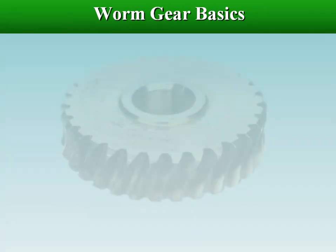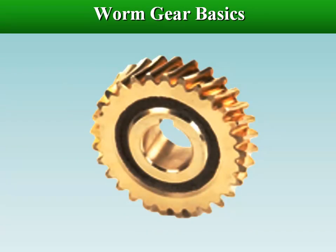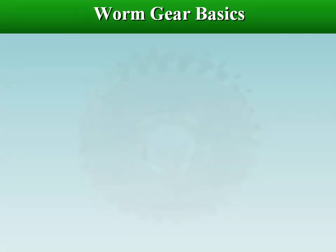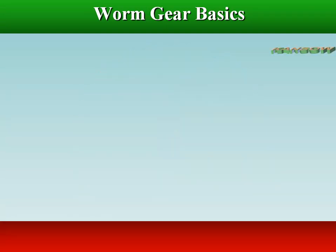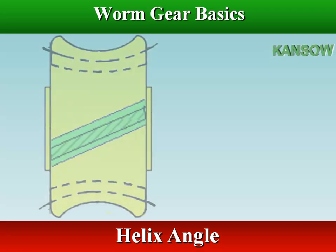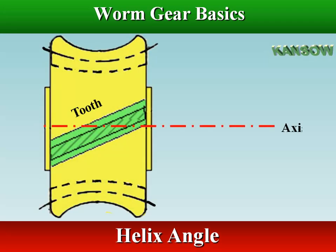The worm wheel or gear, which is the driven member, is similar to a helical gear with a face curved to conform to the shape of the worm. Helix angle is the angle at which the gear teeth are aligned compared to the axis.